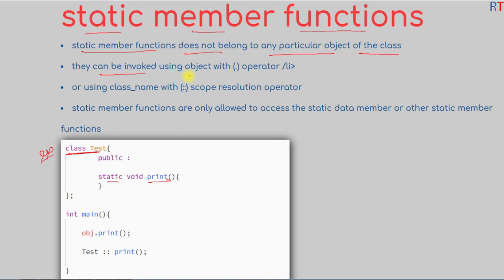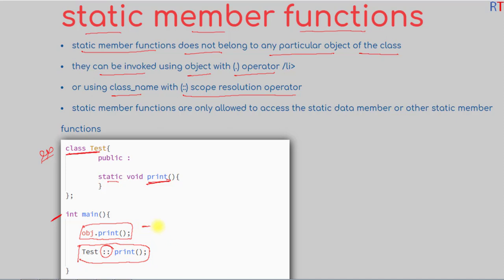Static functions can be invoked using an object with the dot operator, or they can be invoked using the class name with the scope resolution operator. Inside the main method, we can call the static function either using the object with the dot operator or using the class name with the scope resolution operator.